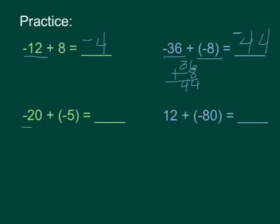Negative 20 plus negative 5. Again, same signs, so find the sum. The sum of those two is 25, so negative 25.